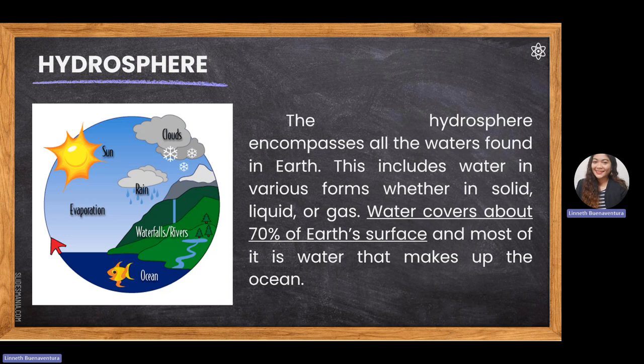The next subsystem is the hydrosphere. Hydrosphere comes from the Greek word 'hydro,' meaning water. The hydrosphere encompasses all water found on Earth — on the surface or underground. Water covers about 70 percent of Earth's surface, and most of the Earth's surface is covered with water.